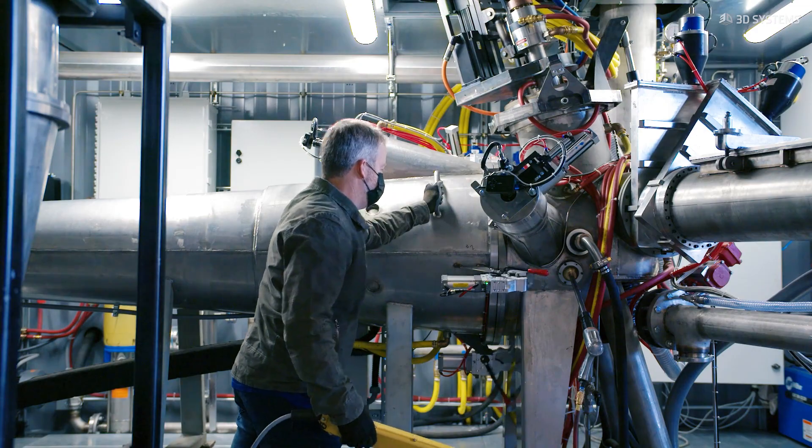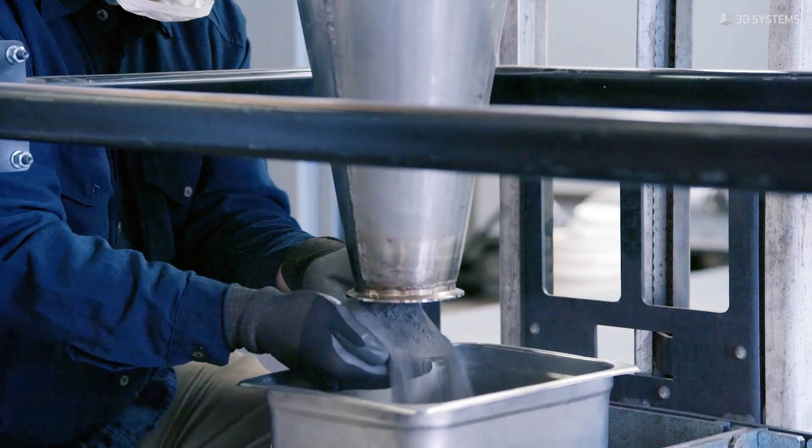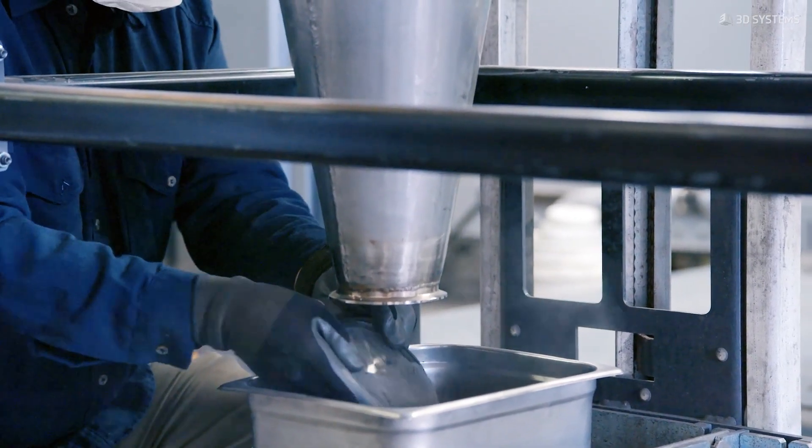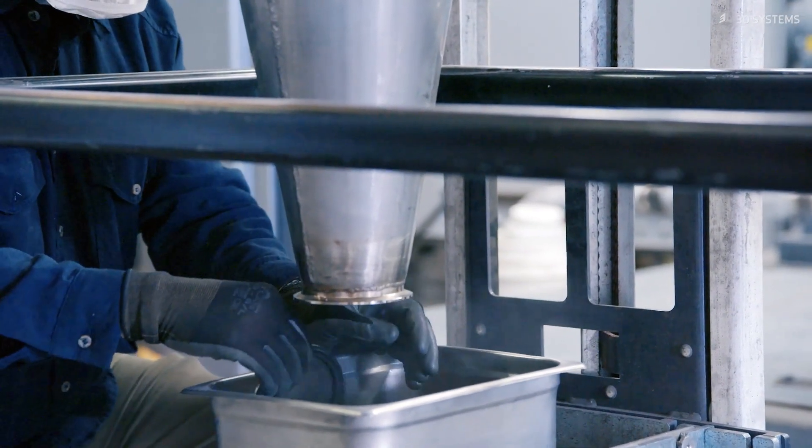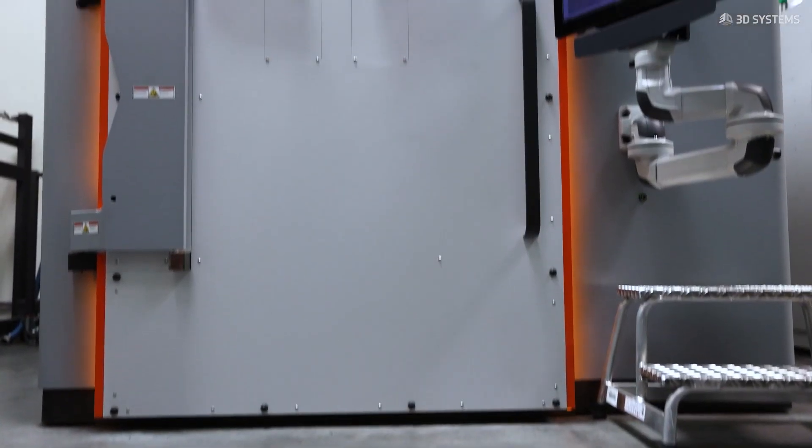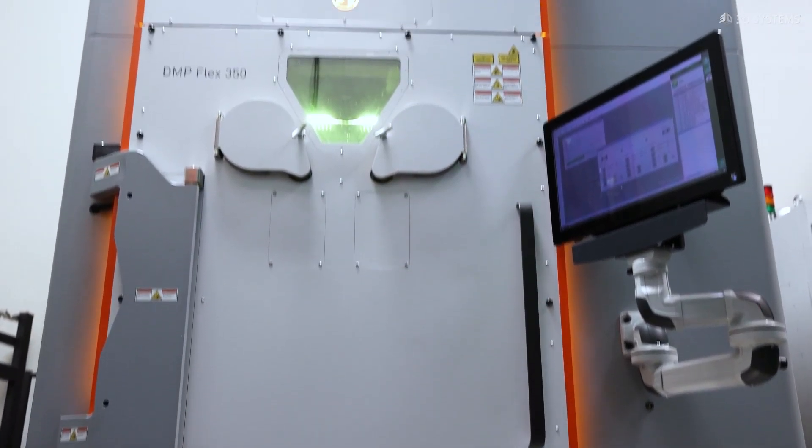It's known as titanium 1023. It's a lot stronger and more durable than aluminum. We're able to make the parts a little bit lighter as well since we're producing them through additive manufacturing processes. Now that we have a machine of our own in-house, we really have full control of our process.